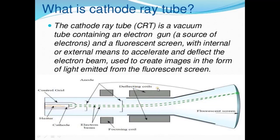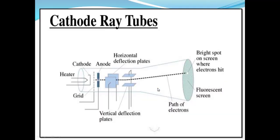In more detail, we can see that in the cathode ray tube there is the heater, the cathode, the cathode anode, as well as the horizontal deflection plates and vertical deflection plates. You can see the vertical deflection plates, the beam of electrons, and where they are going to hit on the fluorescent screen where you get the image.